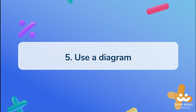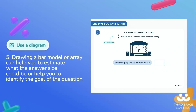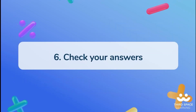Strategy five: use a diagram. Drawing a bar model or array can help you to estimate what the answer size could be or help you to identify the goal of the question.